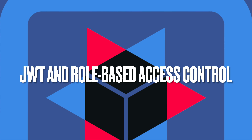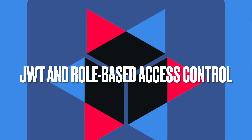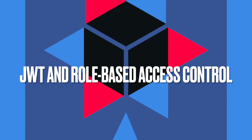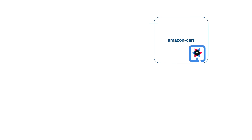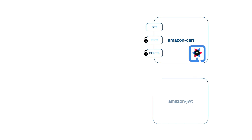In this video, you are going to learn how to secure access to HTTP endpoints using JWT authorization tokens and role-based access control with Quarkus. In the first part, we are going to create a project called Amazon Cart, which exposes three different endpoints: GET, POST, and DELETE. After that, we are going to secure our endpoints based on user roles. In the second part, we are going to create another project, Amazon JWT, also with Quarkus.